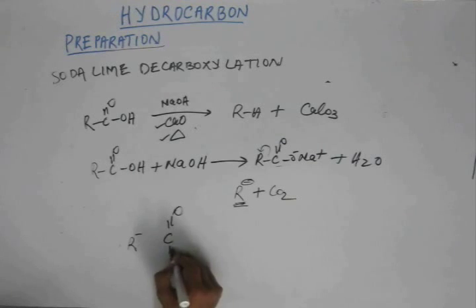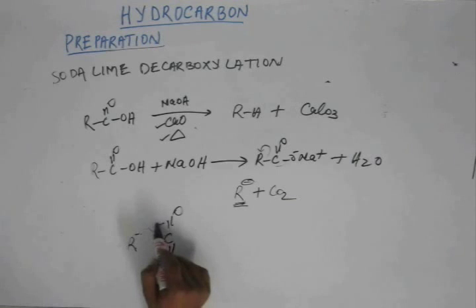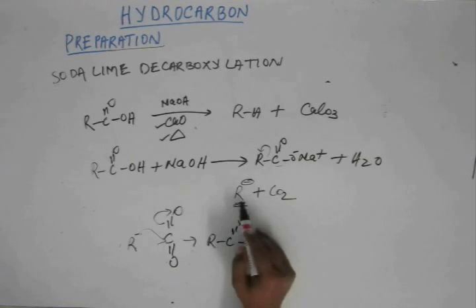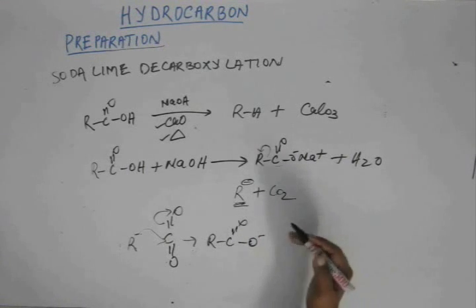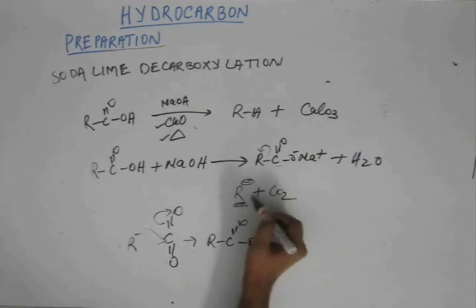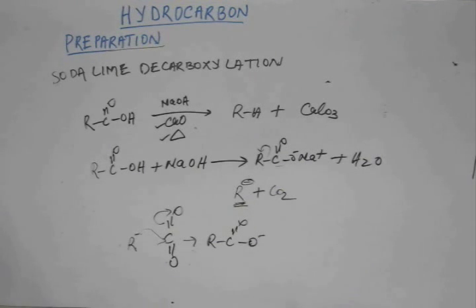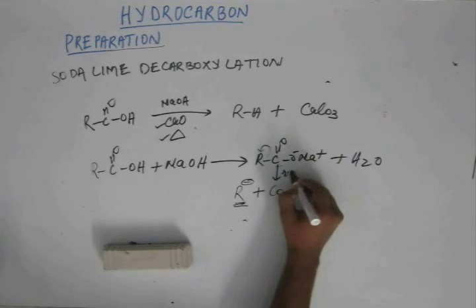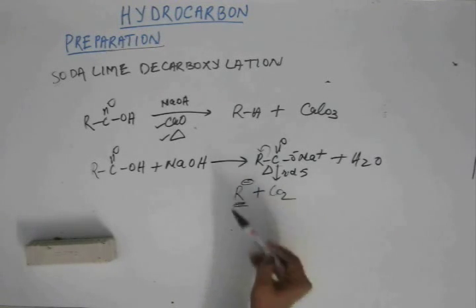If you remember from Grignard reagents, R minus attacks carbon dioxide gas, resulting in a carboxylate ion. The same thing can happen here — this CO2 gas can be attacked by this R minus, and the reaction has a huge tendency to go backward because of the high instability of R minus. R minus being very unstable, along with bond breaking in this step, means this step requires a huge amount of heat. This is the RDS, and without heat, this reaction cannot occur.